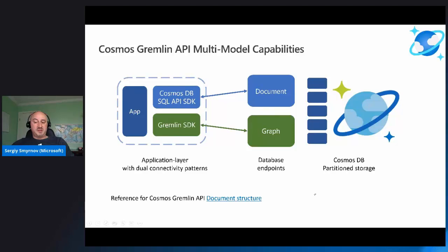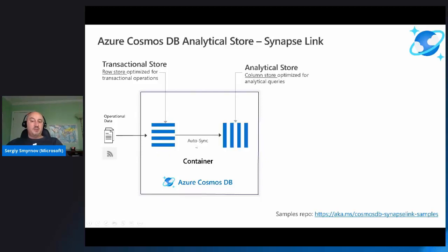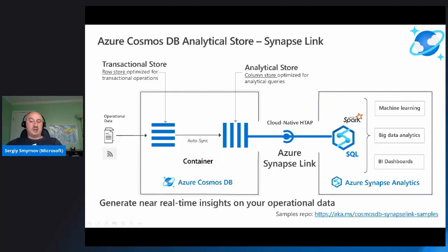Now let's look at Cosmos DB Analytical Store Synapse Link, which we'll leverage in our demo. This is one of the differentiators for Cosmos DB: transactional data is auto-synced to an analytical store, which can then be queried using Azure Synapse Link with Spark or SQL query engines for analytical operations and downstream use cases. Currently, the analytical store is not available for Gremlin API itself — only for SQL API and Mongo API — but we can still take advantage of the native Synapse Link integration to avoid downstream propagation and security key management complexities.